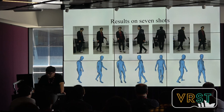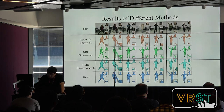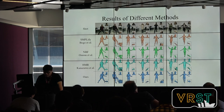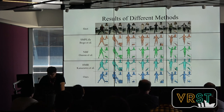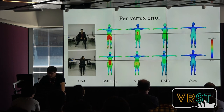Here are seven shots on the same subject. We can see that our method can effectively model the whole human shape, including hands and head orientation. We will show more details on the experiments based on a video demo. Here are comparisons with different methods. We compare our method to Simplify, MBF, and HMR. Simplify takes a 2D skeleton for optimization, while MBF and HMR are deep learning-based methods with a single image. We can see that our method obtains the best performance among all methods. This is a quantitative comparison based on ground truth body models, using a heat map to show errors — the bluer, the smaller. Our method is closest to ground truth among all methods.